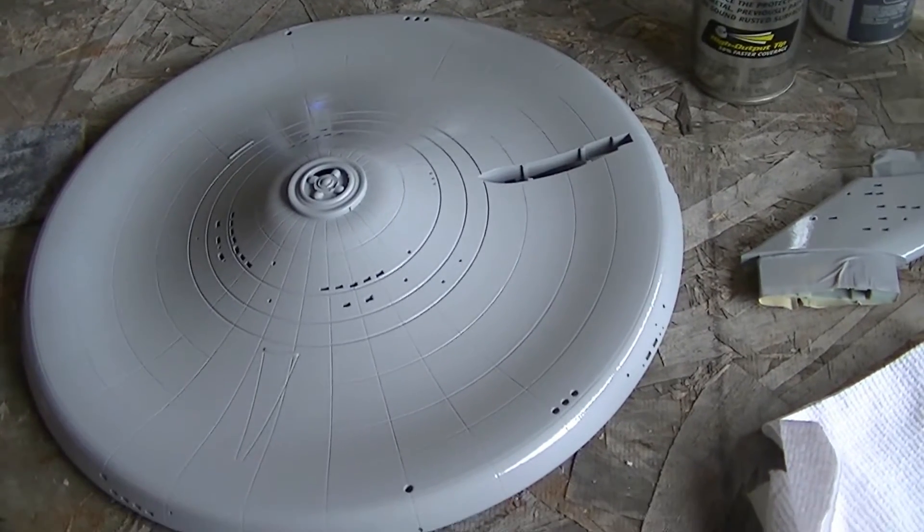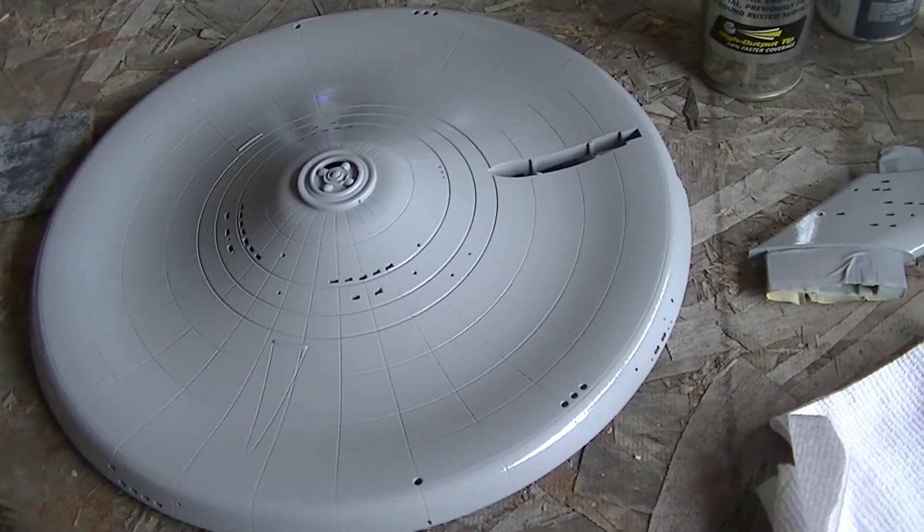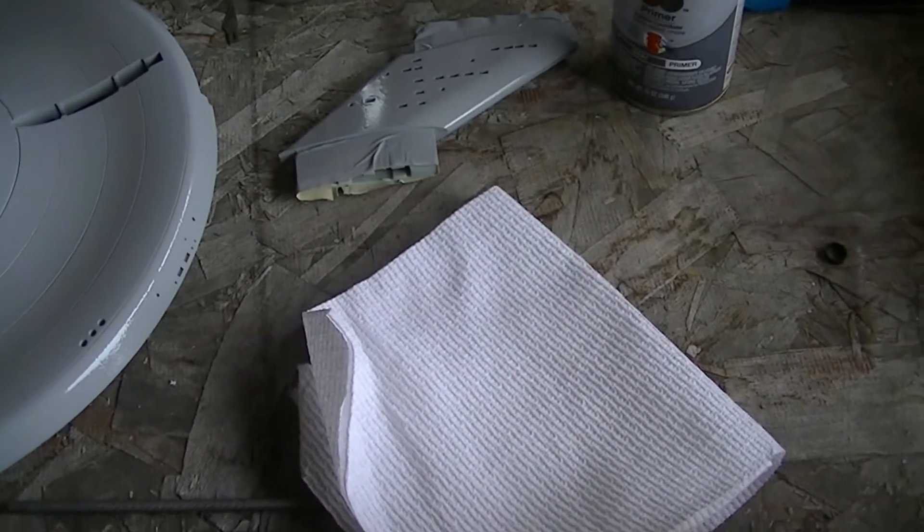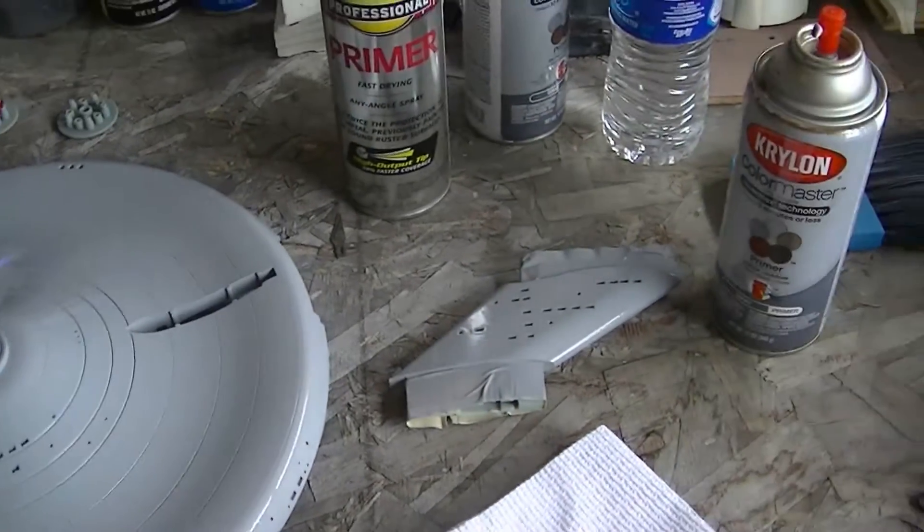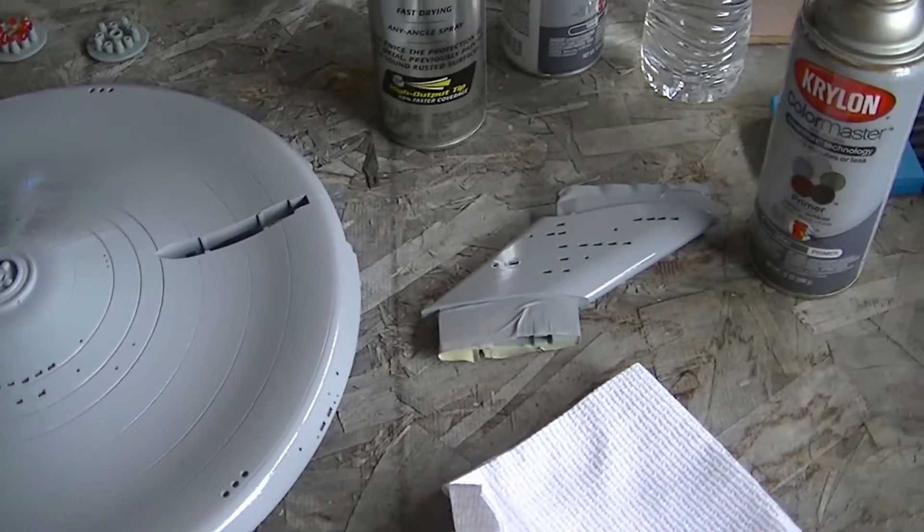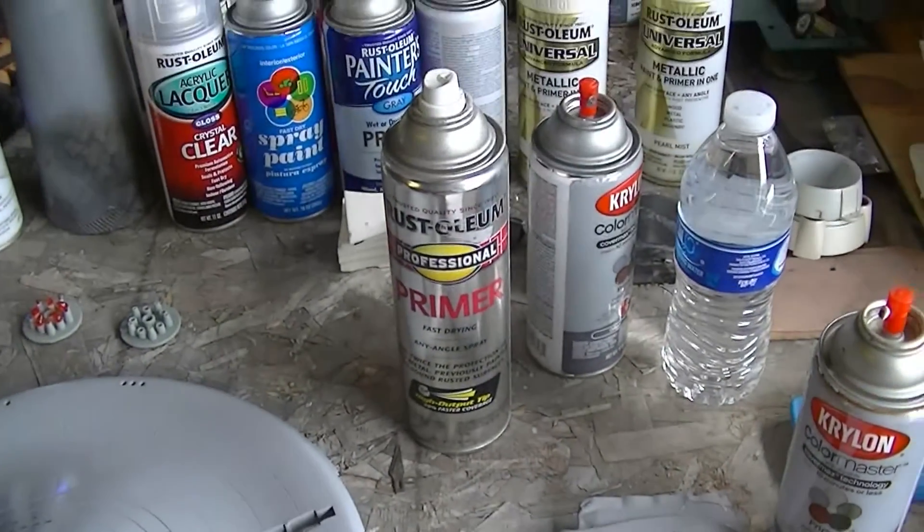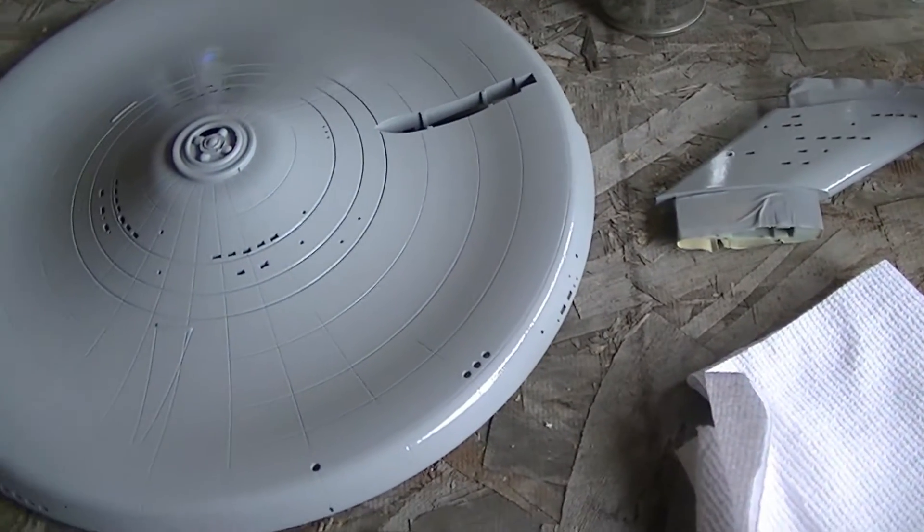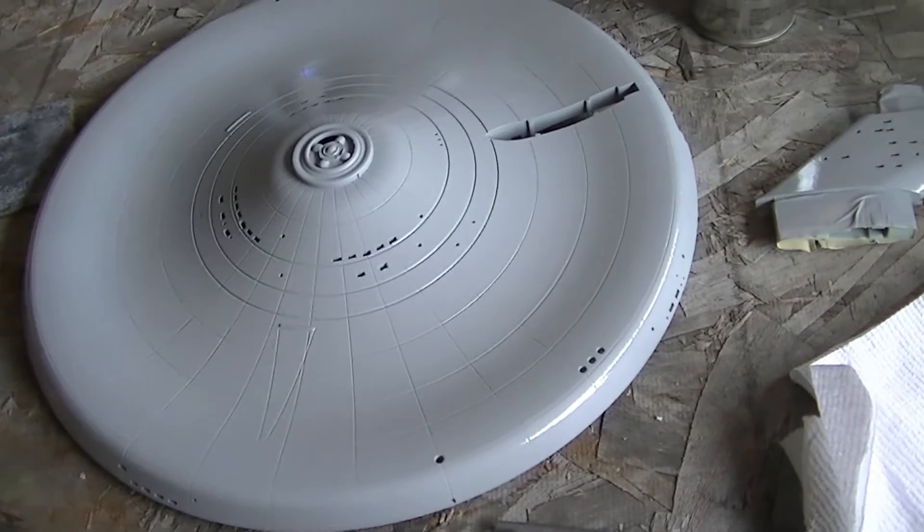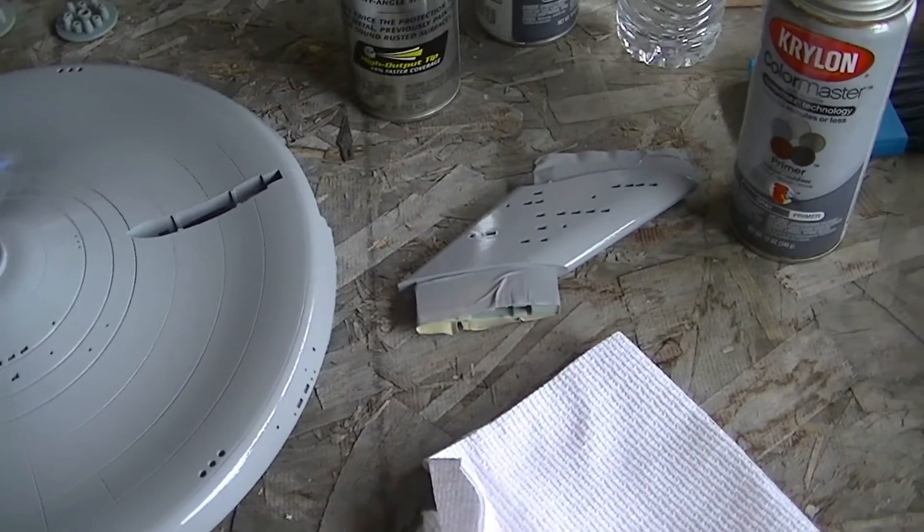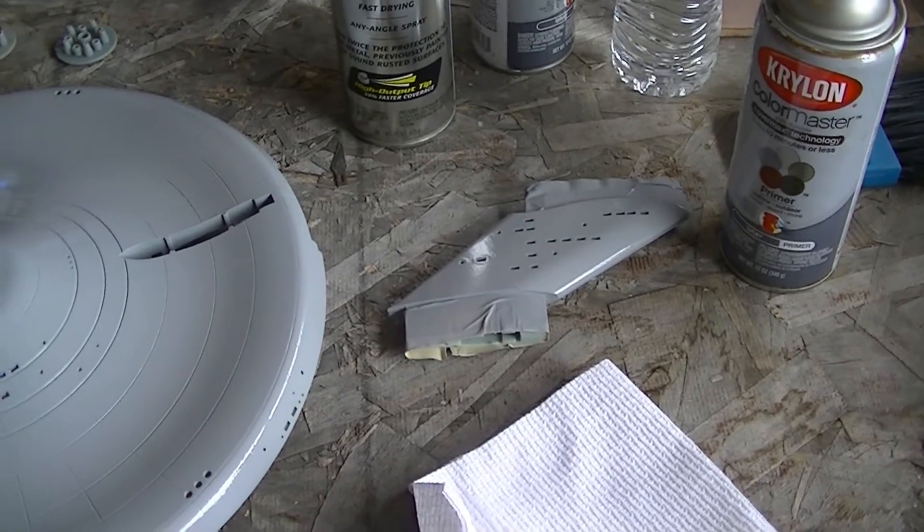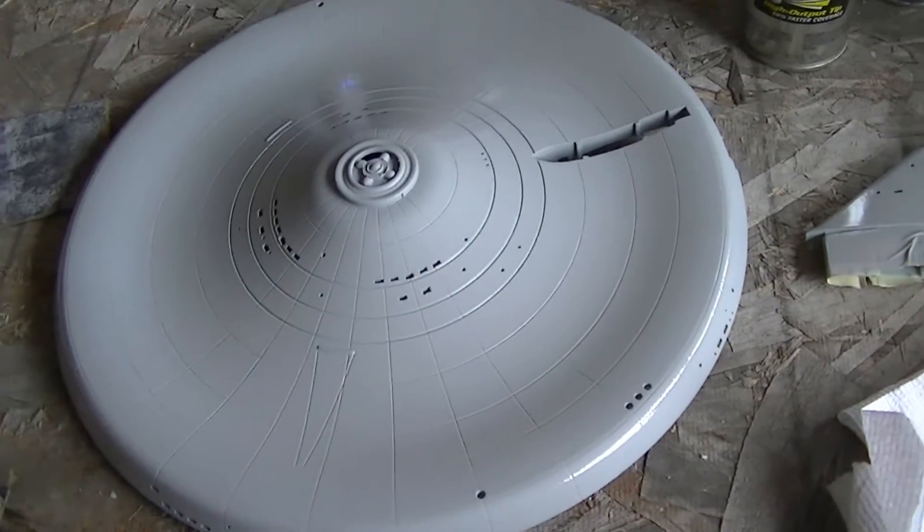I finished sanding the lower primary hull, dried it off with a paper towel, got all the loose dust off of it and the neck, and shot both pieces with this gray primer as I showed earlier. It looks a little thick and a little mottled now, but trust me, it'll level out and it'll look smooth when we come back a little bit later.